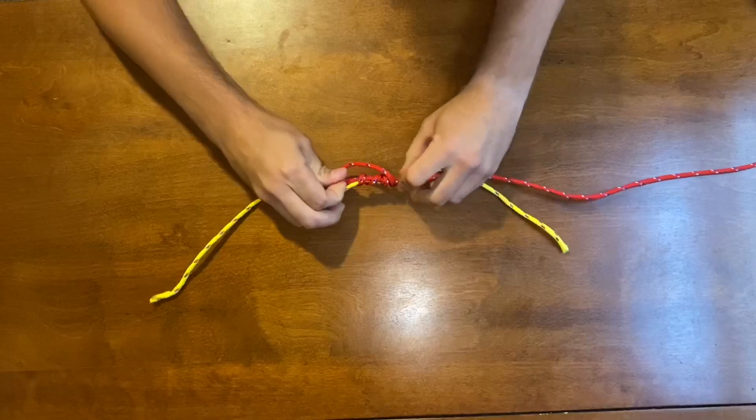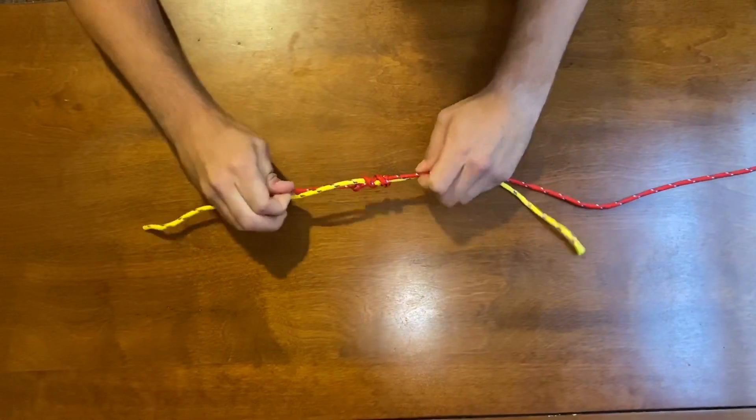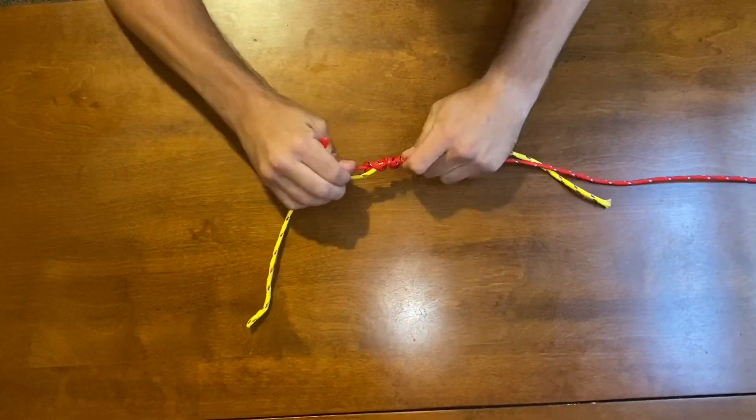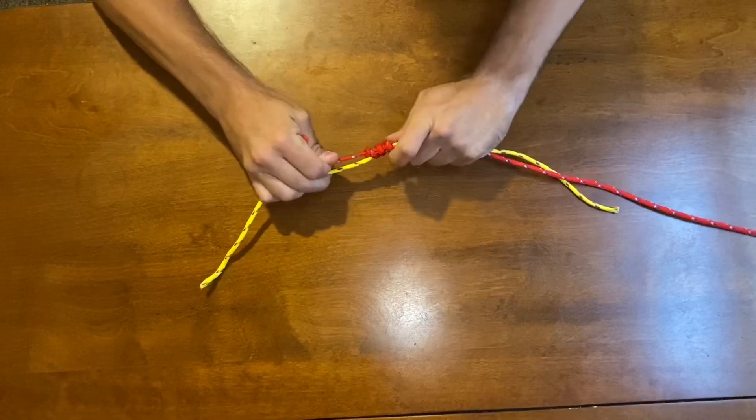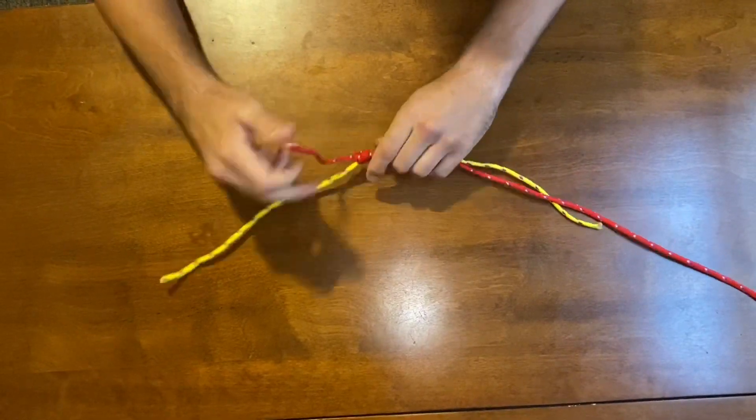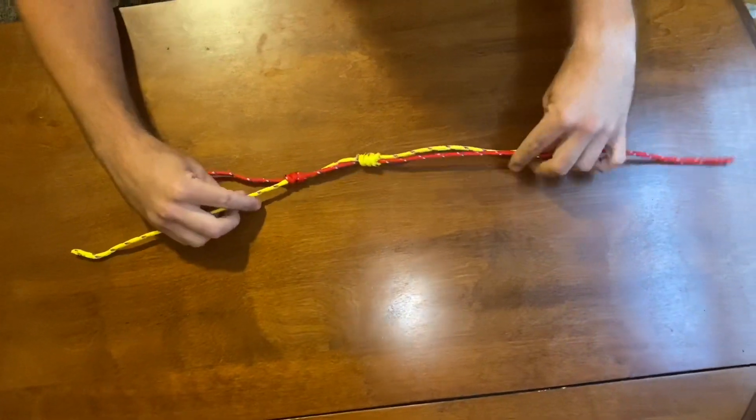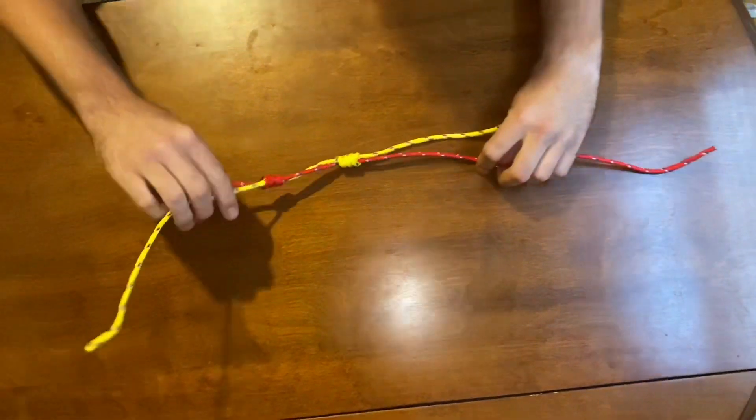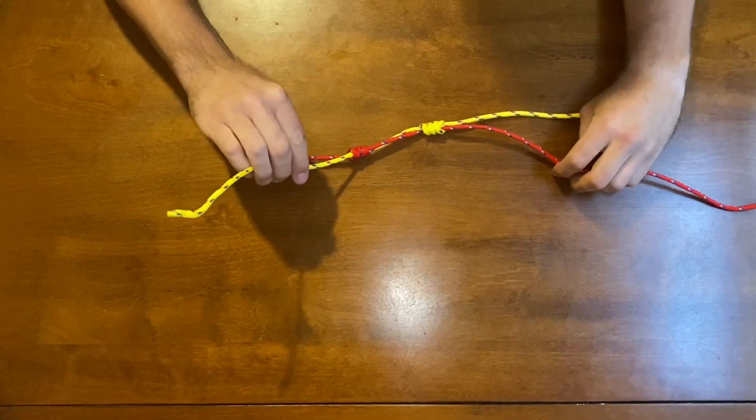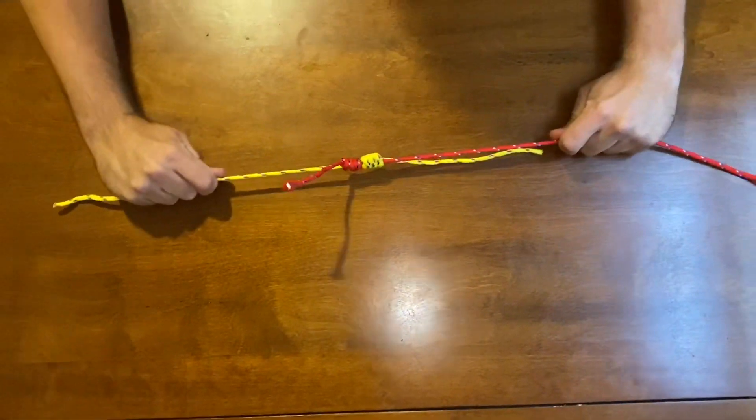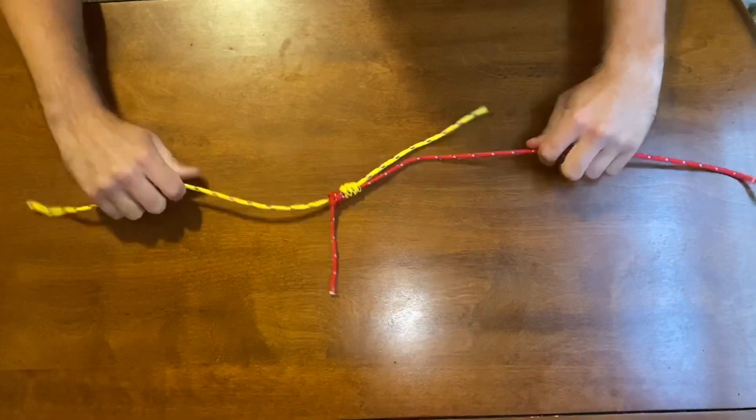Same thing. Then you're going to pull that tight. You're going to notice there's a little bit of a gap in between. Take your main line here and the line going to where your bait would be, and pull those until they're nice and tight with each other.